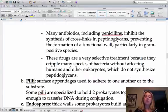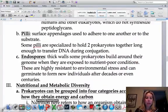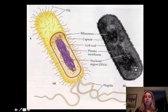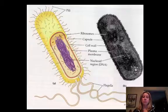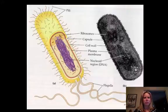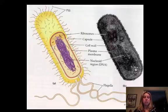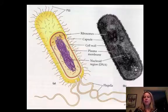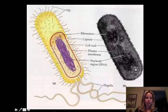Another thing bacteria have is something called pili. If you look at this picture, you can see hair-like structures growing off of it — those are the pili. They can use them for a couple of things: to attach to a substrate (for example, strep bacteria attaching to the back of your throat so they don't get swallowed), to attach to each other to form colonies, and also to exchange DNA, since in binary fission there isn't really any DNA exchange going on.